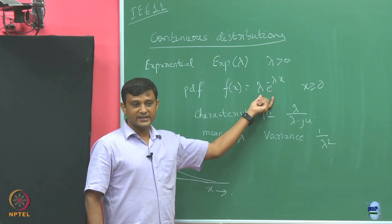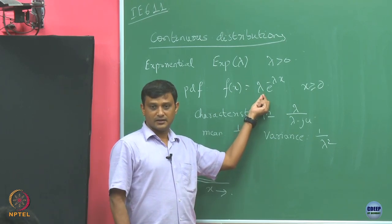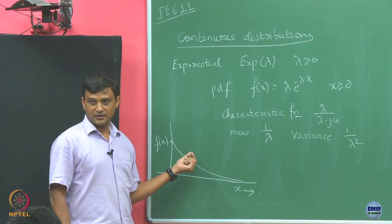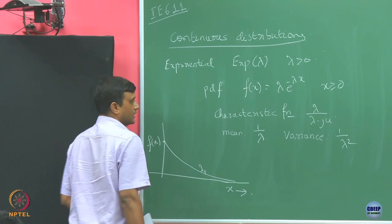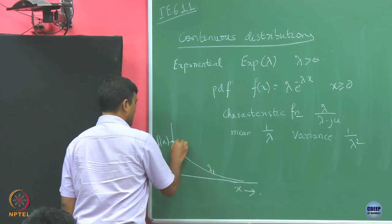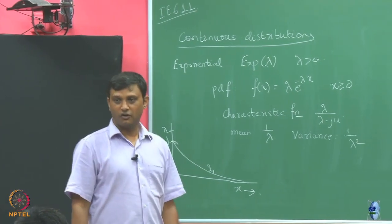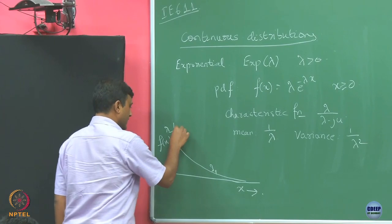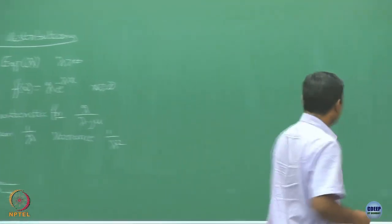Suppose I increase lambda — say this is for some lambda_1 and I take lambda_2 larger than lambda_1. At least I know the starting point was lambda_1 and the new starting point is lambda_2. The function falls much faster because lambda appears in the exponential term. It starts higher but decays much much faster.